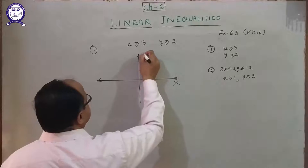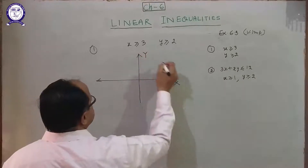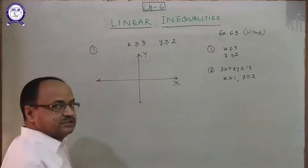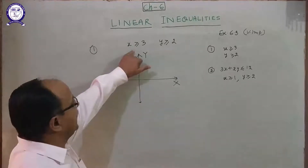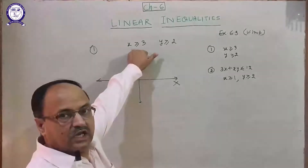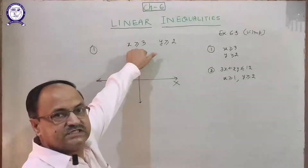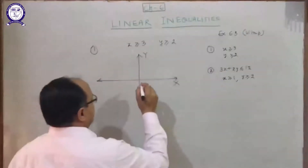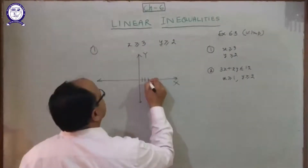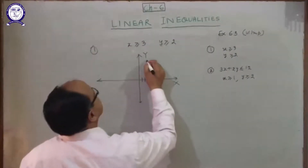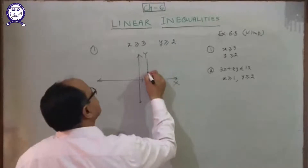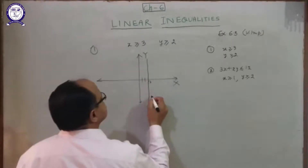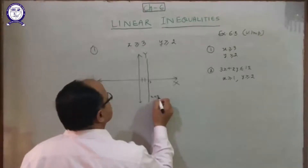Draw the graph with x-axis and y-axis. x equals 3 means the line which is parallel to the y-axis. Count one, two, three — this is the line x equals 3.